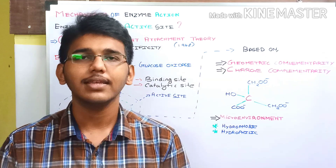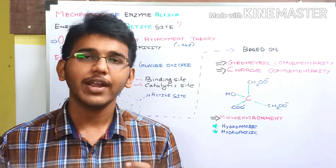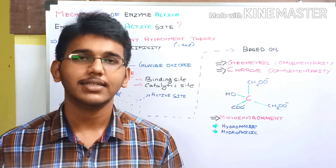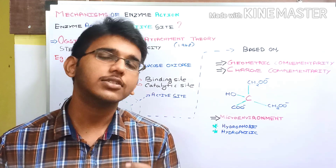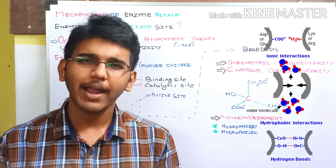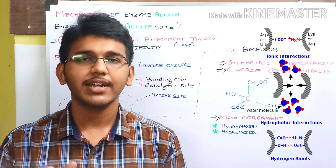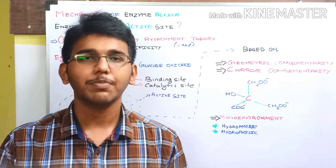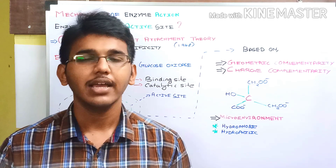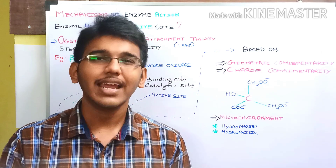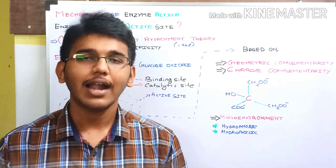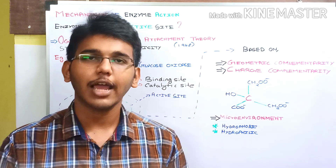How does an enzyme provide this free energy required for the conversion? Whenever a substrate interacts with an enzyme, it mostly does so through non-covalent interactions. When non-covalent interactions are formed between the substrate and enzyme, some amount of energy is released in the form of binding energy — the energy released whenever an interaction or bond is formed. This binding energy is added to the free energy of the system, which is responsible for overcoming the energy peak, ultimately leading to the conversion of substrate to product.